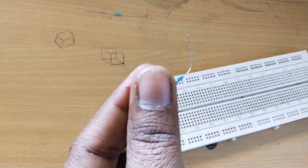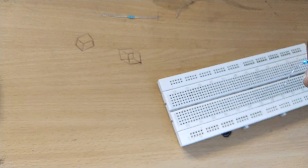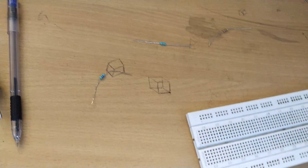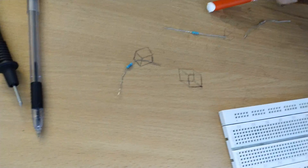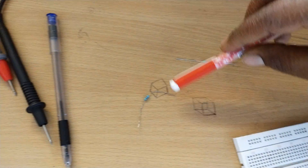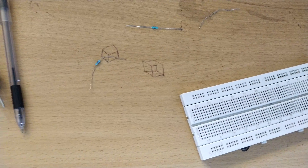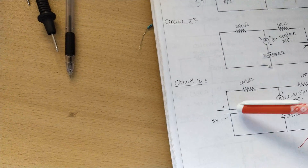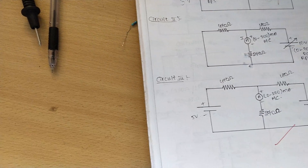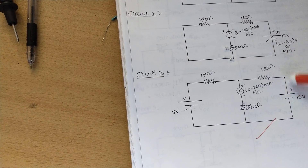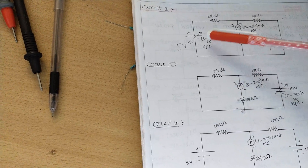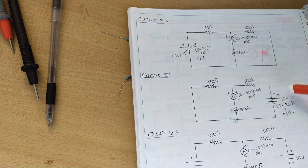We begin by connecting the 270 ohm resistance, then the 470 ohm resistance, and the 180 ohm resistance on the breadboard. The 10 volt source is short-circuited first, and similarly the 5 volt source is short-circuited, after which the 10 volt source is connected.